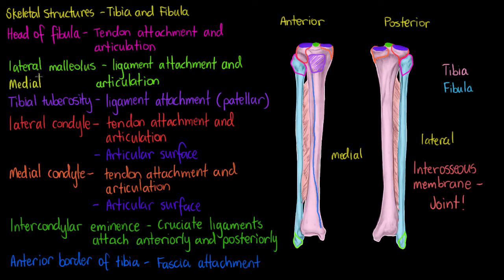Going back up to our lateral malleolus, below it we also have our medial malleolus, highlighted here at the bottom of our tibia in yellow. The medial malleolus is going to have those same jobs — it's a point of ligament attachment and articulation. Like the lateral malleolus, it's going to interact with our talus, which is one of our tarsal bones.